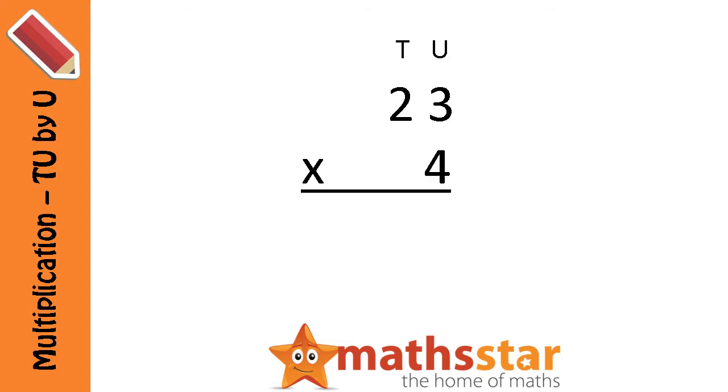Our first step is to multiply 4 by 3. Now this is where knowing your times tables is really important. So 4 times 3 equals 12. Now we can't just write 12, because we can only put one digit in the units column.